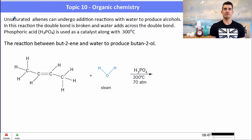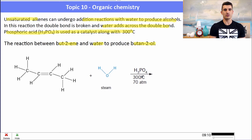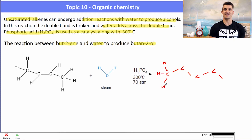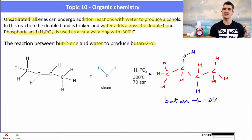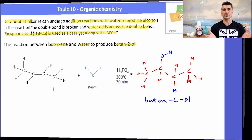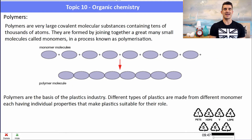Another reaction of alkenes is with water to produce alcohols. The double bond breaks and water adds across it. Conditions required: a phosphoric acid catalyst, 300°C, and 70 atmospheres pressure. For example, 2-butene reacts with water to give an alcohol with a hydroxy group on one carbon and a hydrogen on the other. Because 2-butene is symmetrical, there is only one possible product.